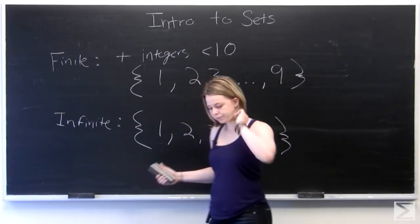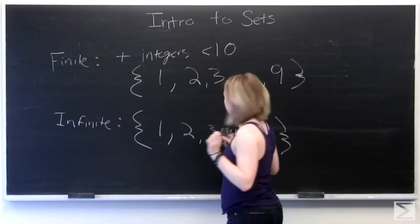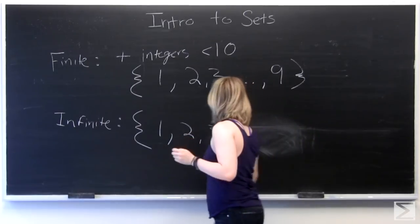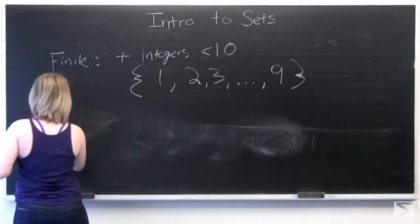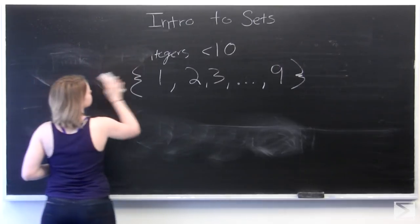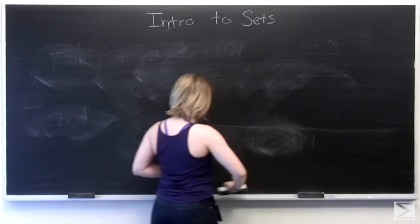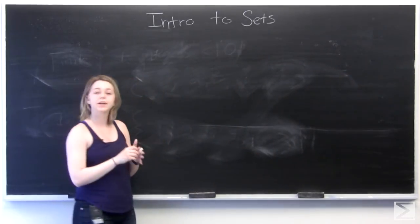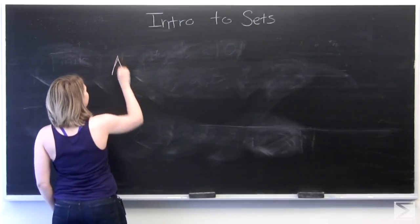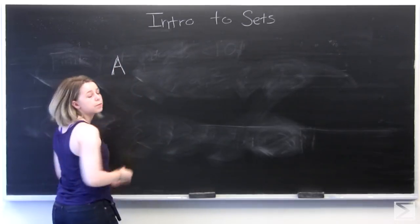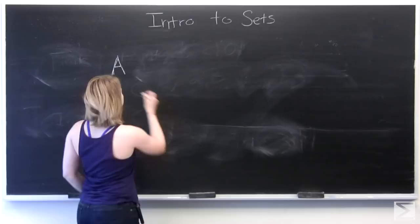And so one of the things that I mentioned a second ago is that a set is a collection of things with a common property. Now this isn't 100% truthful of a statement. We could have a set of numbers that don't really go together.